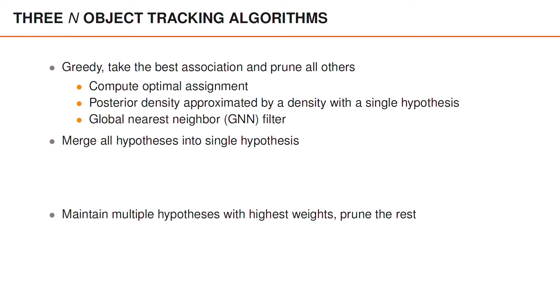The greedy algorithms are based on computing optimal assignments. And the posterior density is approximated by a density with a single hypothesis. The tracking algorithm that we will have a look at is called Global Nearest Neighbor or GNN filter. And this is a generalization of nearest neighbor filter to N objects.